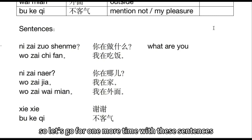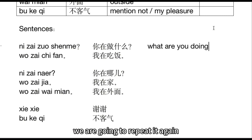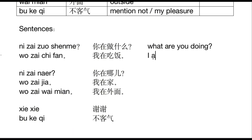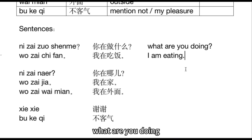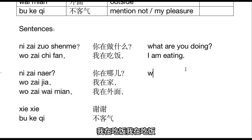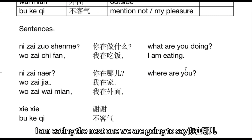Let's go through these sentences one more time. The first one: 你在做什么 — 'What are you doing?' The answer is 我在吃饭 — 'I am eating.' The next sentence: 你在哪儿 — 'Where are you?'